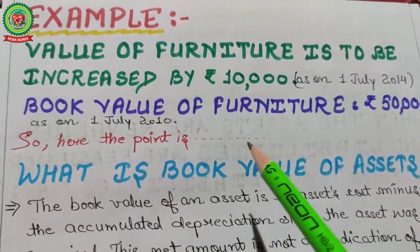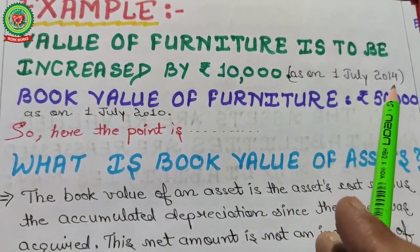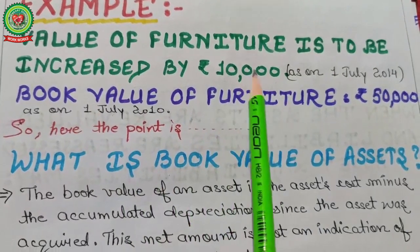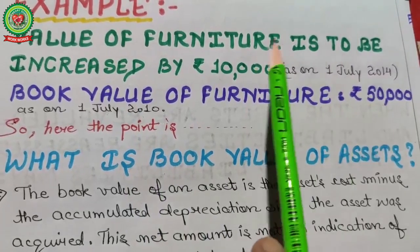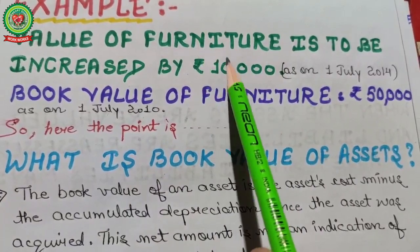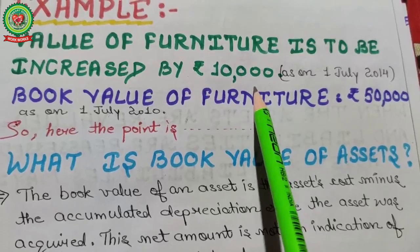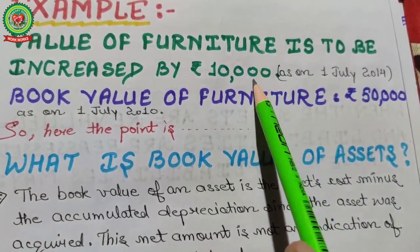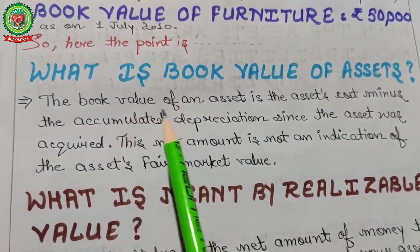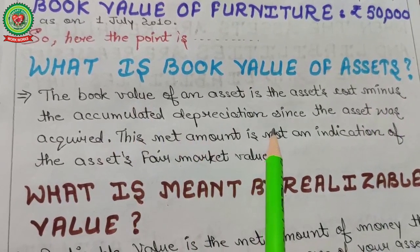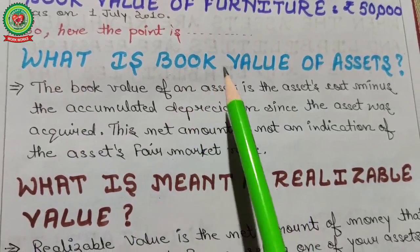To understand revaluation, consider an example: value of furniture is to be increased by 10,000 as on 1st July 2014. Book value of furniture was 50,000 as on 1st July 2010 when purchased. Now, at the time of revaluation, the value has increased by 10,000, making the current value 60,000. The book value of an asset is the asset's cost minus accumulated depreciation since the asset was acquired.